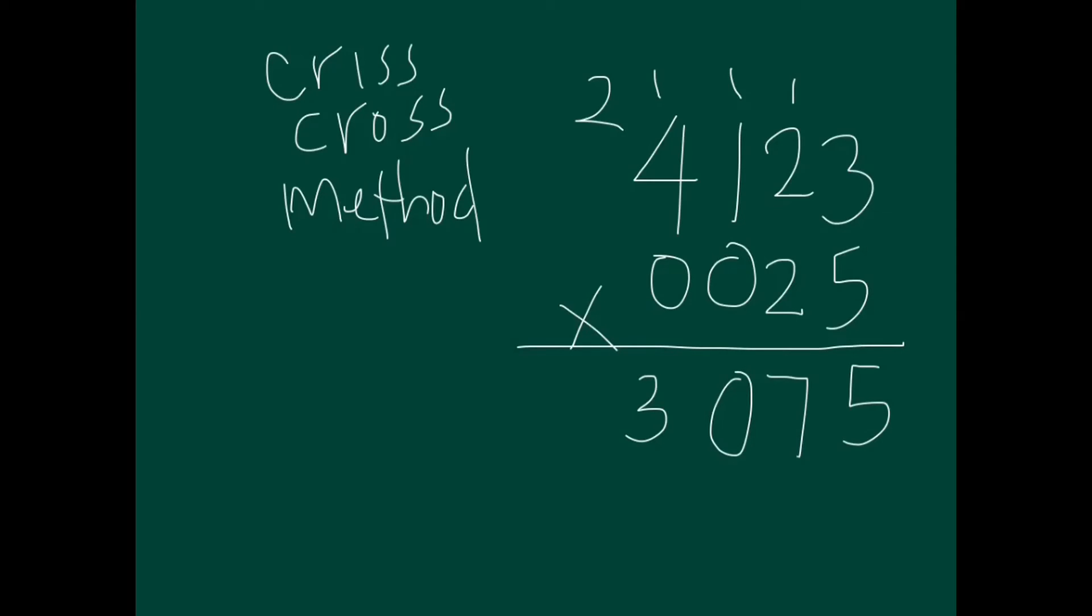Next, we go four times two is eight, and these are zero, plus this two here is ten.